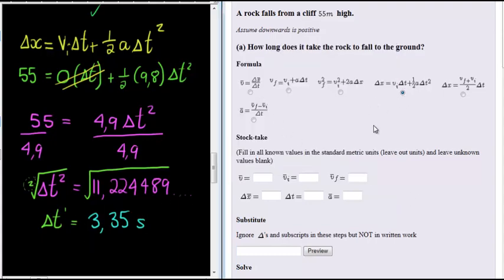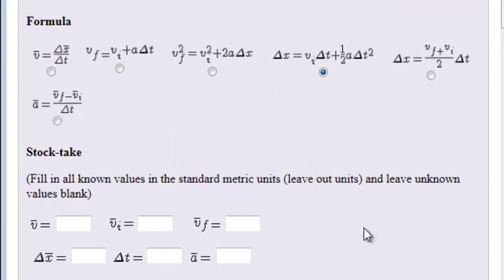So let's input our answers. First of all, we have the input here, stock-take. We do not know the average velocity. We know the initial velocity is zero. We don't know final velocity. We know that the change in displacement is going to be 55 meters. Since he's falling down, that 55 meters is positive because we assume that downwards is positive. The change in time, that's what we calculated, but that's not for the stock-taking step. That's our answer. 9.8 is our acceleration.